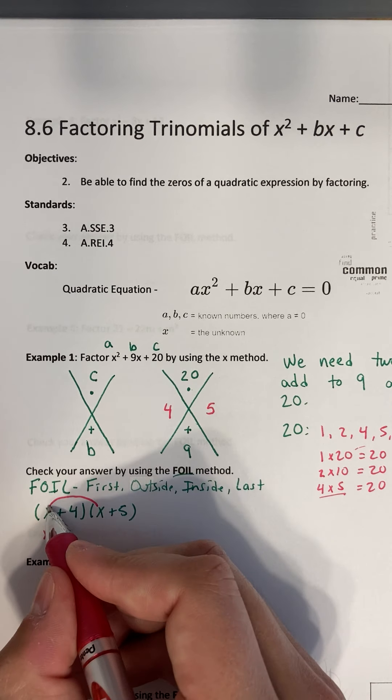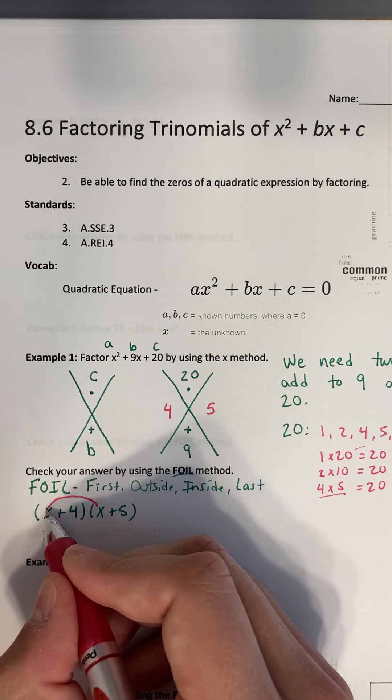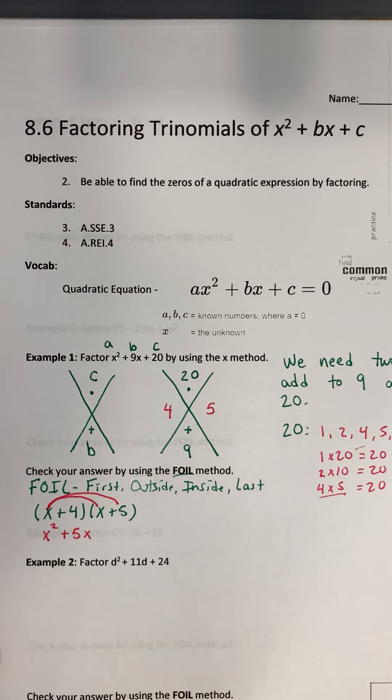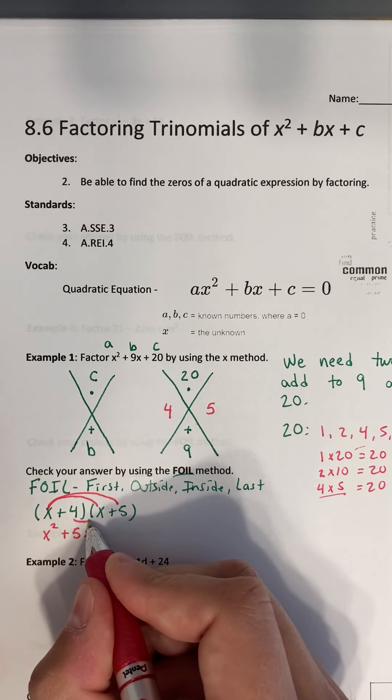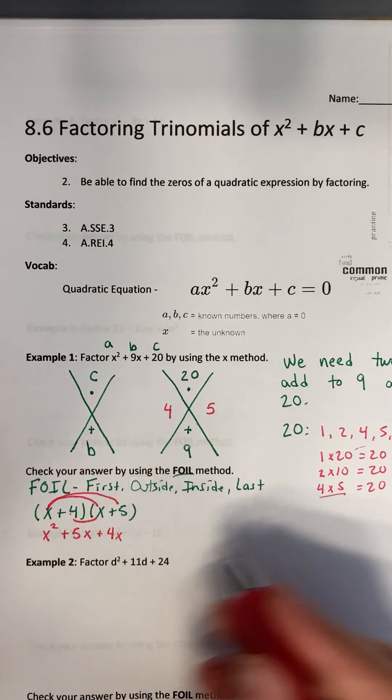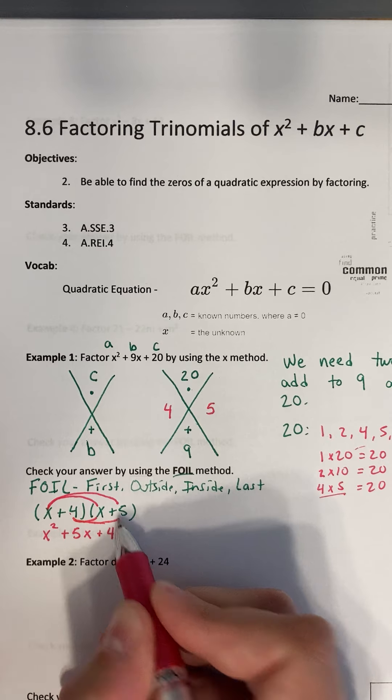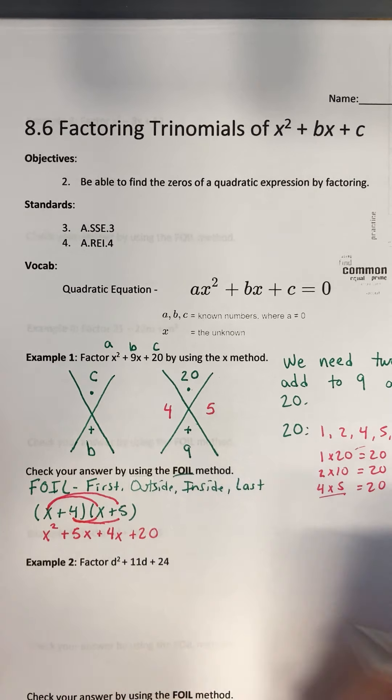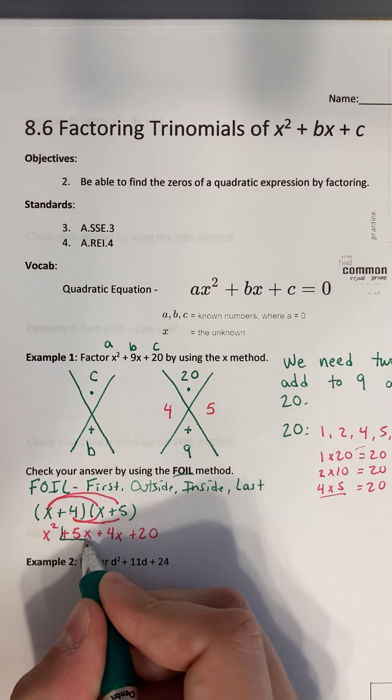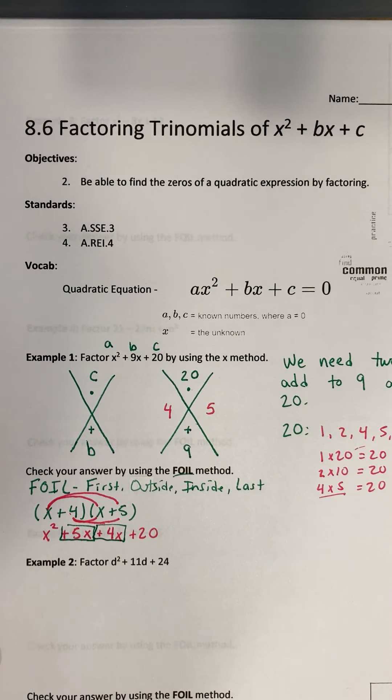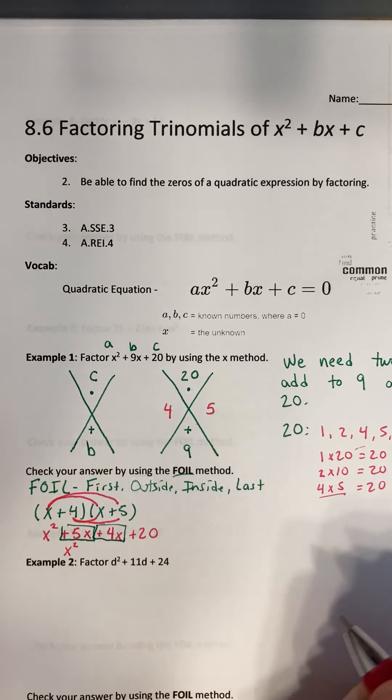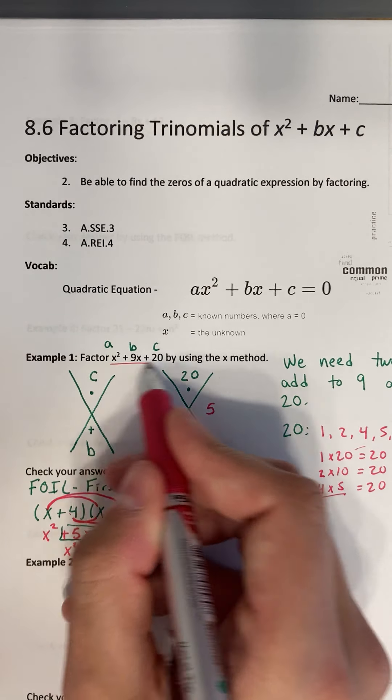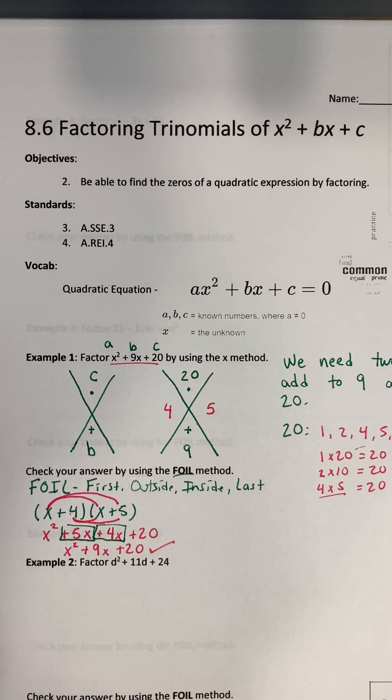Now we are going to do the inside. So the two inside things. So 4 times x is 4x. And now we're going to do the last. So 4 times 5. You want to keep the signs in front. Right now everything's positive, so it doesn't matter. But 4 times 5 is going to give us 20. And you notice that I can combine these two things right here. So x squared. And what's 5x plus 4x? You got it. That's 9x plus 20. And this is the same thing that we started with right here. So we know that we did it correctly.